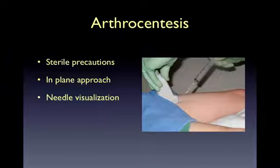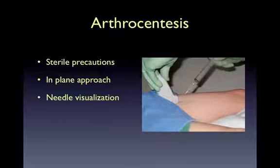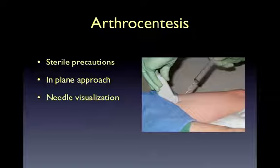Arthrocentesis is performed first by sterilely prepping and draping the area overlying the femoral neck, applying a local anesthetic, and then directing the needle in plane with the transducer towards the anterior synovial space with real-time needle visualization. This technique is similar to that used when performing vascular access using a longitudinal approach. Although not shown in this photo, a sterile probe cover should be used. Depending upon the age of the child, sedation may be necessary. The operator should remove as much fluid as possible, as this procedure is both diagnostic and therapeutic.